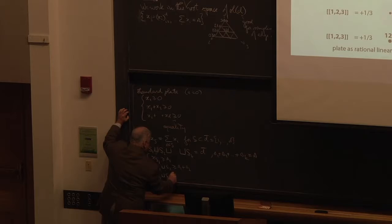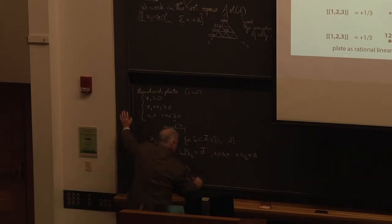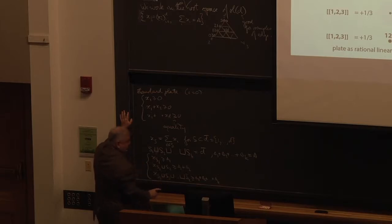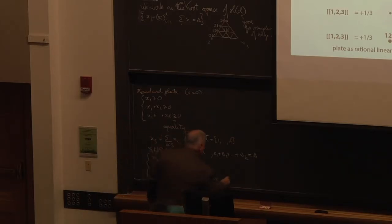And S1 plus S2 plus SK to be equal to our sum S. And in this case, the equations for a plate are XS1 is bigger than or equal to S1, little s1. XS1, disjoint union with S2, is bigger than S1 plus S2. And XS1, union with S2, union with SK is bigger than or equal to S1 plus S2 plus SK.